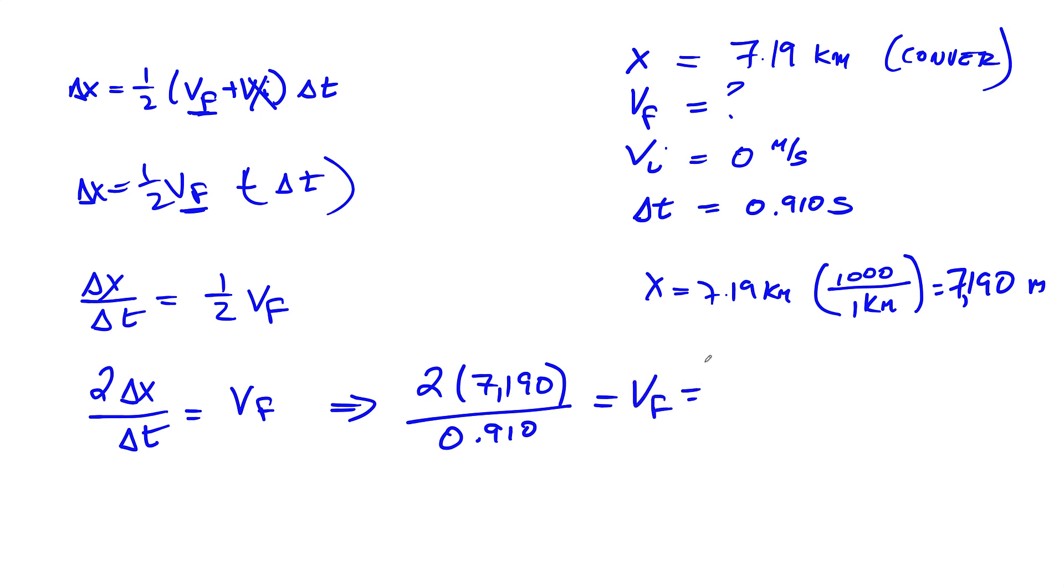If I get my calculator out: two times 7190 equals, then divide by 0.91. I have a velocity of 15,800 meters per second.